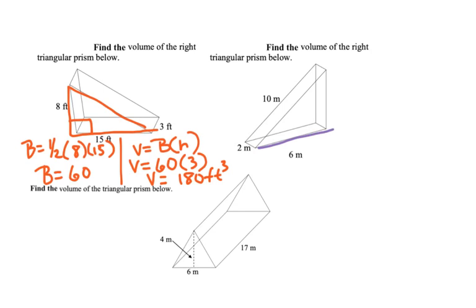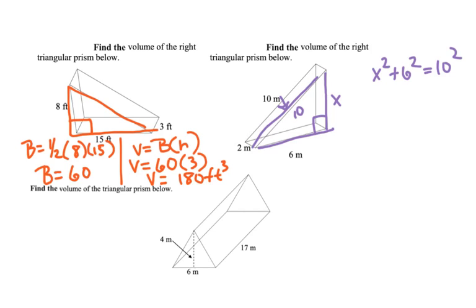Now if we look here in our right triangular prism, we have our hypotenuse, which is 10, but we do not have our other leg. So we need to find that first, and then we can find the base of our triangle, and then we will do our formula for volume. I'm going to do Pythagorean theorem to find our other leg, so x squared plus 6 squared equals 10 squared. x squared plus 36 equals 100. We subtract 36 from both sides. x squared equals 64. We take the square root of both sides, and x will equal 8.